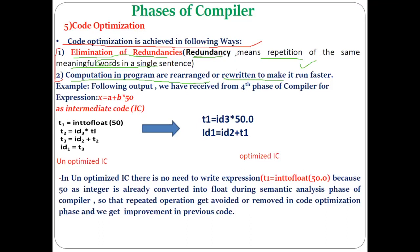Now let's look at a concrete example. We have received the output from the fourth phase — intermediate code generation — for a given expression. This is the unoptimized intermediate code, meaning something is present in this fragment of code that can be changed without affecting the final output, or some redundant code might be present.